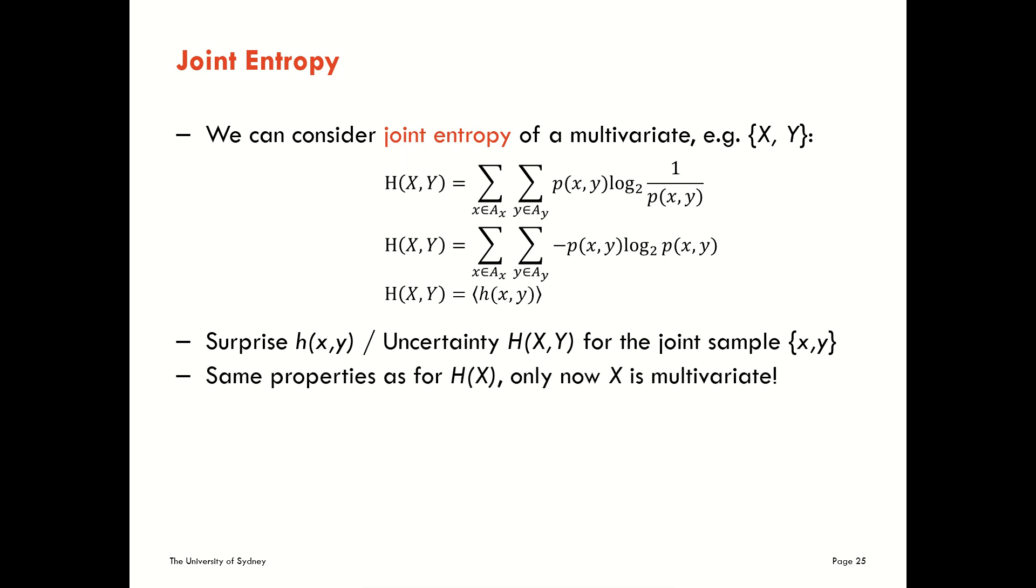So it has all the same properties, only the variable is multivariate. That's a straightforward extension. We've written everything down with pairs of variables x and y, but of course we could have more variables than that in there as well. Now one key question is, let's just concentrate on a pair for the moment, is the Shannon entropy of the pair equal to the sum of the entropy of each of the values here?